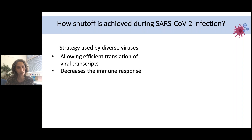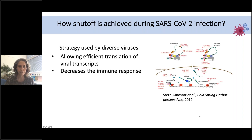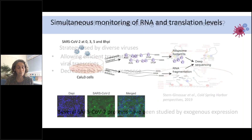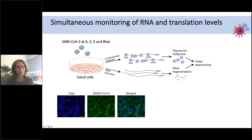Different viruses develop diverse mechanisms to interfere with host translation, including inhibiting transcription of cellular genes, different steps of mRNA processing, nuclear export, directly manipulating the translation machinery, or degrading cellular RNA in the cytosol or nucleus. Although several SARS-CoV-2 proteins have been studied by overexpression, there was no global overview of what actually happened during SARS-CoV-2 infection. The first step is calibrating a system where most cells are infected, since we're averaging signal across all cells. We calibrate infection conditions in Calu-3 cells — lung adenocarcinoma cells — in which most cells are infected with SARS-CoV-2.